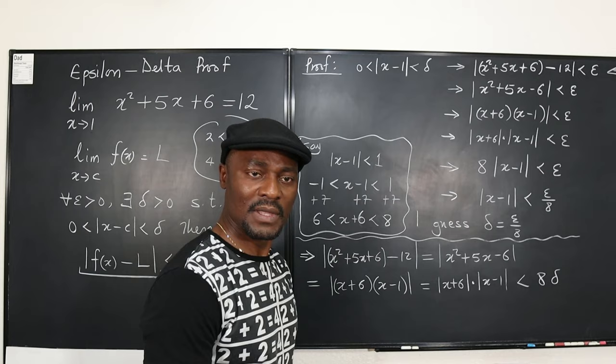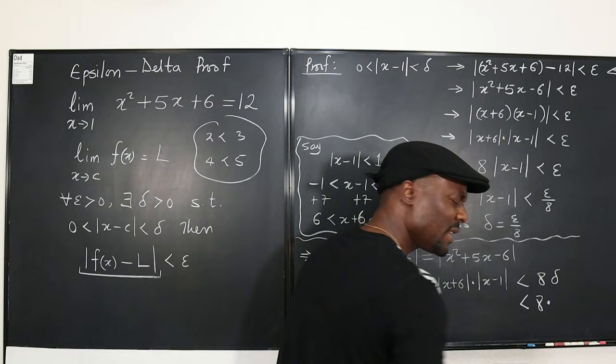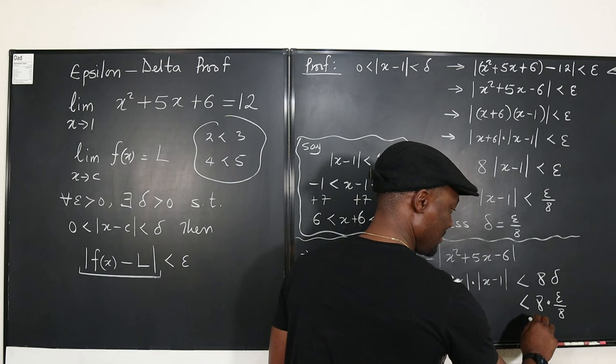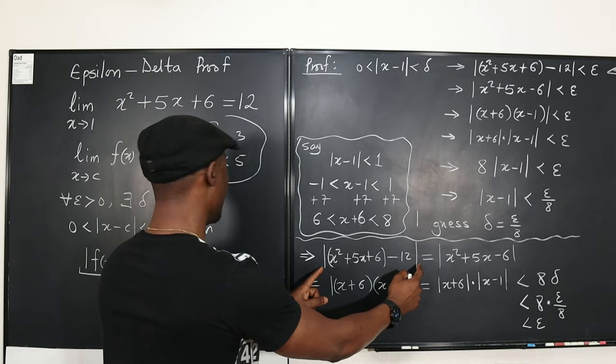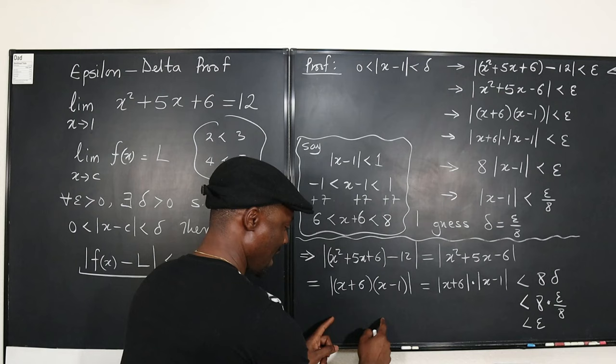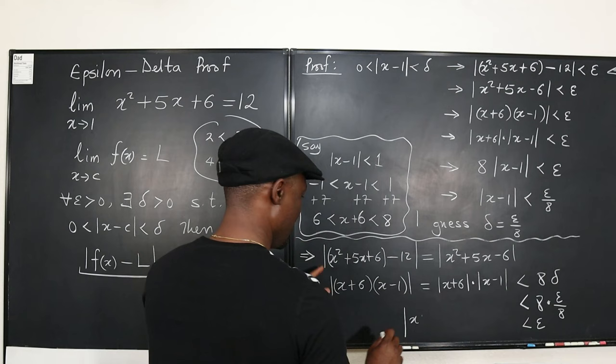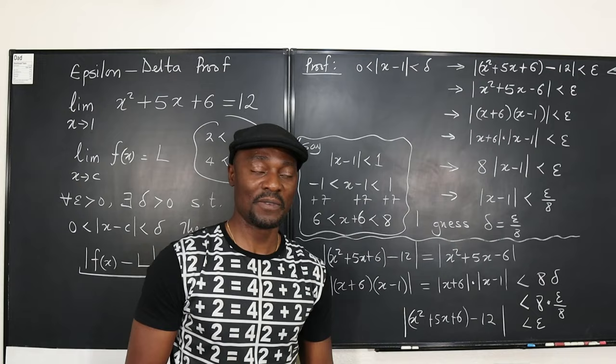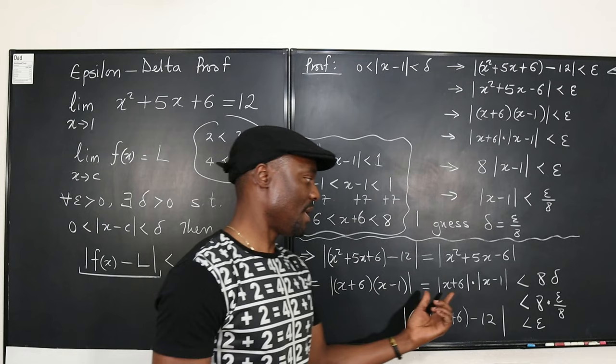We have |x + 6| · |x − 1| < 8 · delta. Substituting delta = epsilon/8, we get 8 · (epsilon/8) = epsilon. So the entire expression |x² + 5x + 6 − 12| < epsilon. That completes the proof. The method is: work forward to get a suggestion for delta, then start the formal proof using that delta — which is in terms of epsilon — and bring everything together. Remember, it's a proof: you know where you're going, you're just showing the path systematically.